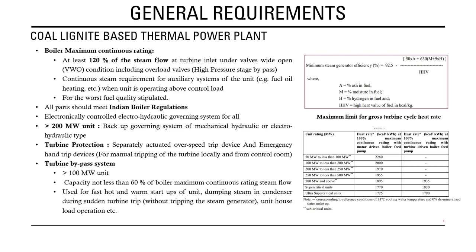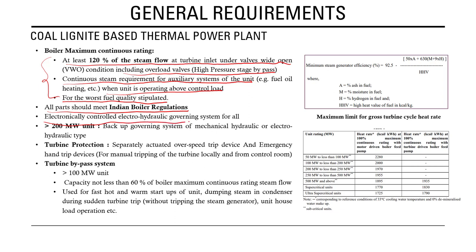For boiler maximum continuous rating, it should be at least 120 percent of steam flow at turbine inlet under wide-open valve (WBO) conditions, including overload valves, high-pressure stage bypass, and continuous steam requirements for the unit's auxiliary system when operating above control load. Continuous rating should also be provided for the worst fuel quality stipulated. All parts of the boiler must meet the Indian Boiler Regulations.